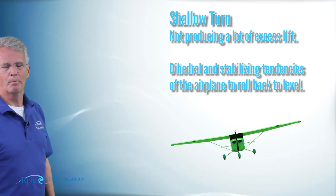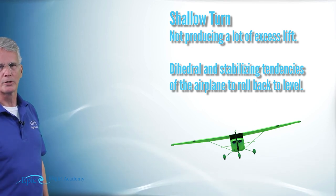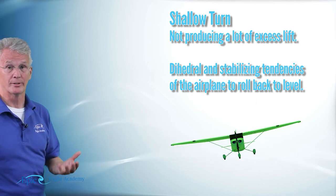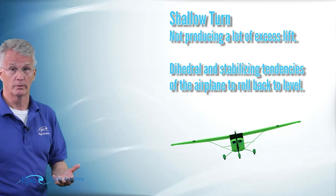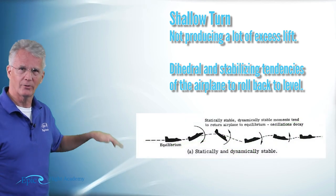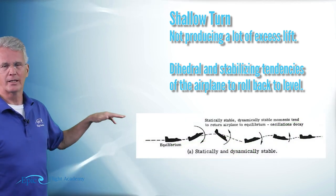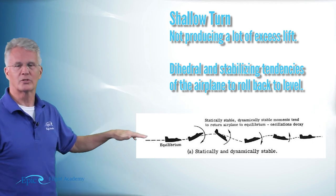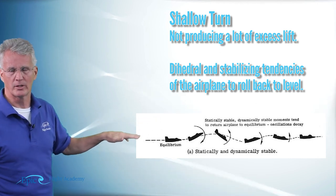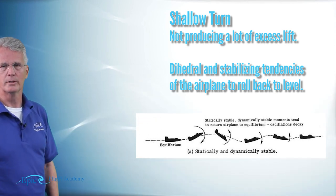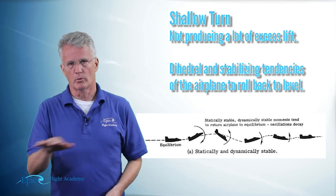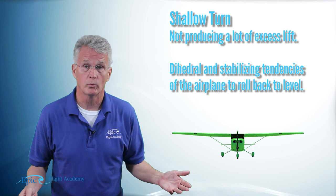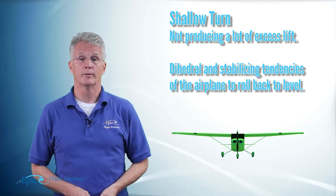I want you to think back to our discussion on stability, static stability and dihedral. In a shallow turn like this, dihedral and those stabilizing tendencies of the airplane will actually cause the airplane to roll back toward level, which is what we want in a stable airplane.